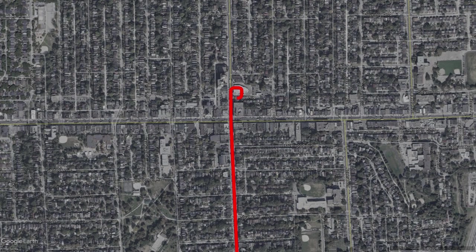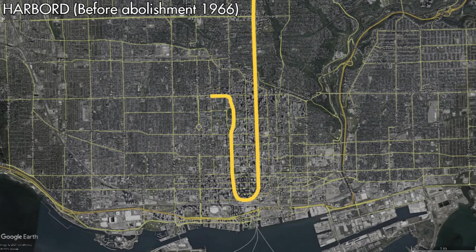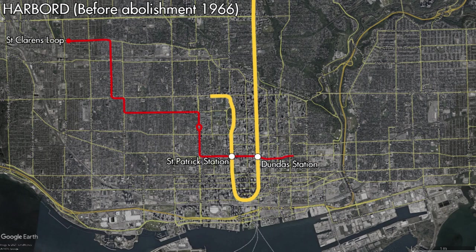During construction of the Bloor-Danforth subway, the old Lipton Loop would be torn up as it would be the site of the future Pape Station bus terminal. A new temporary Gertrude Loop was constructed immediately north of it. The opening of the Bloor-Danforth would mark the end of the Harbord Streetcar, as its service was abolished on February 26th, 1966, ending 55 years of service.